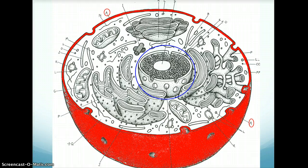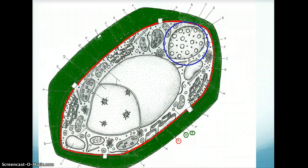The nucleus in this animal cell is circled in blue. The nucleus in this plant cell is also circled in blue.